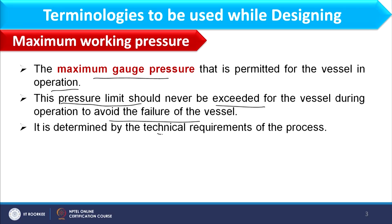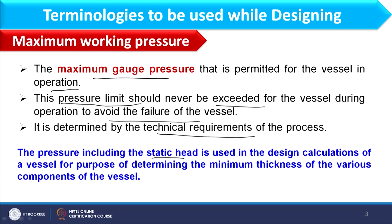Maximum working pressure is determined by the technical requirements of the process. For each process, we already know what the pressure and temperature conditions should be, and what variation occurs during operation. The maximum possible pressure is the maximum working pressure. Along with operating pressure, we also need to consider the static head — rho×g×h for the liquid filled up to a certain height — and that should be added to the operating pressure for design.